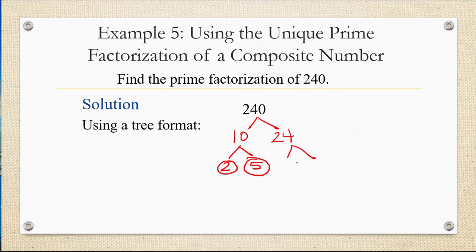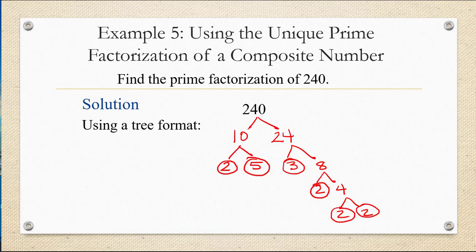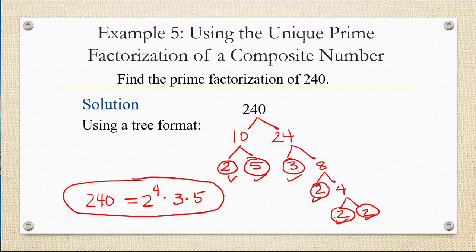24 breaks up into 3 times 8. 3 is prime, so that branch has reached its end. But 8 is still divisible by numbers other than itself and 1 — in particular, it's divisible by 2 and 4. Now 2 is a prime, so that branch stops. But 4 can continue to be factored into 2 times 2, and those are both primes. There are no more branches that can be broken down any further. So we look at the prime numbers circled at the ends of all branches, and we see that 240 has four factors of 2 — so 2 to the 4th — a factor of 3, and a factor of 5. So 240 is 2 to the 4th times 3 times 5.